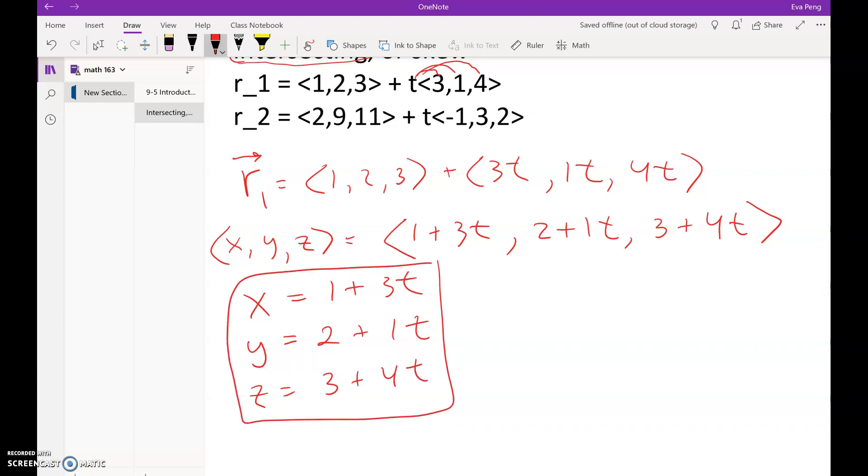We have two vectors that are equal. If the vectors are equal, then the components are equal, so we can set this up to x=1+3t, y=2+1t, and z=3+4t. So there's the first line in parametric form, right there. Now, using a similar technique, you can pretty quickly figure out that the other line is x=2-1t, y=9+3t, and z=11+2t.